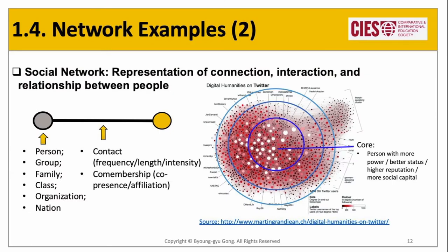The social network represents connections, interactions, and relationships between people. The vertex can mean a person, group, family, class, organization, or even nation. In social networks, edge mostly indicates invisible and abstract connections between people, such as contact, affinity, or co-membership. Social networks have usually been small, centering around key persons in small groups or organizations, called ego networks. But thanks to recent developments in big data and data mining, the size of social networks has been dramatically enlarged, enabling a more bird's-eye view of social phenomena.